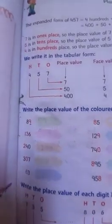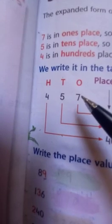Okay, now the example given in your book is like this, 457. Aap kya karenge, agar aapko koi bhi number diya hua hai, toh what you will do first, you will first write ones, tens, hundreds on the top of the number.